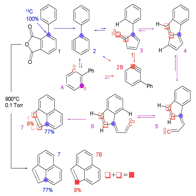Metabolic flux analysis using stable isotope labeling is an important tool for explaining the flux of certain elements through metabolic pathways and reactions within a cell. An isotopic label is fed to the cell, then the cell is allowed to grow utilizing the labeled feed. For stationary metabolic flux analysis, the cell must reach a steady state — where isotopes entering and leaving the cell remain constant with time — or a quasi-steady state.